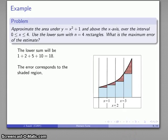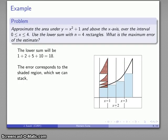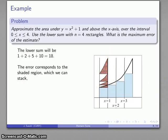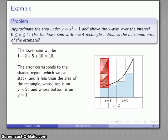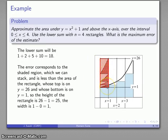How about the errors? The error corresponds to the shaded region, and through the magic of CGI I'm going to slide all those regions to the left and stack them. Because I've chosen equal-width subintervals, all those intervals are exactly width 1, which means when I stack them they all fit in this first space and into that rectangle. The top of the rectangle is at y equals 26, corresponding to the high point on the graph; the bottom is at y equals 1 — so the height of the stack is 26 minus 1 equals 25, the width is 1, and the area is 25.